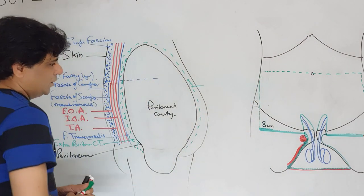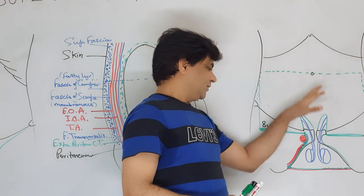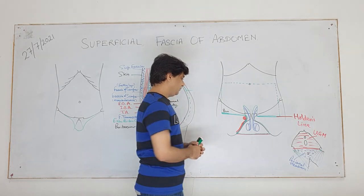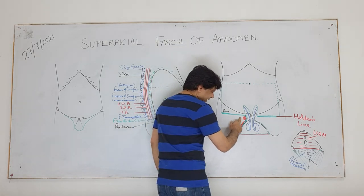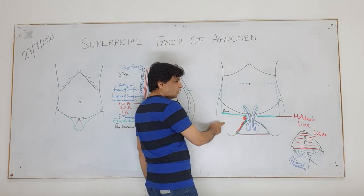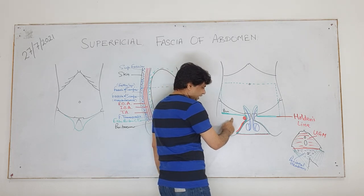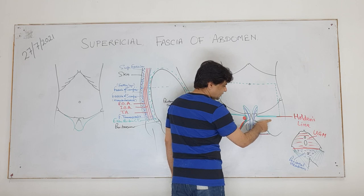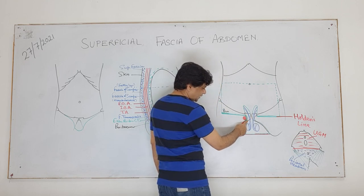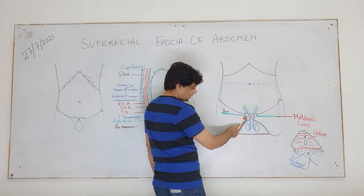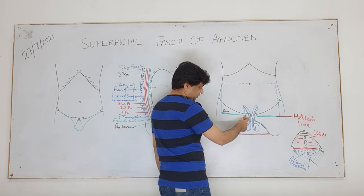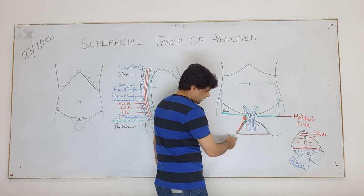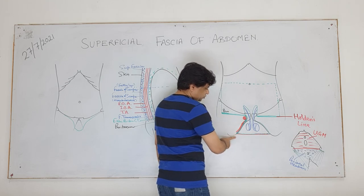That is the continuation of fascia of Scarpa and its attachment down in the pelvis and thigh. In the thigh this is called Holden's line, where Scarpa meets fascia lata. From the pubic tubercle it blends with the muscles, then blends with the lower margin of the ischiopubic ramus and the posterior body of the urogenital membrane.